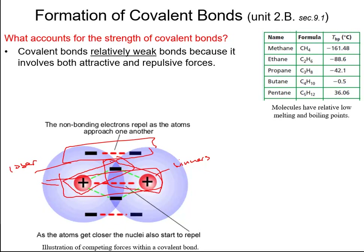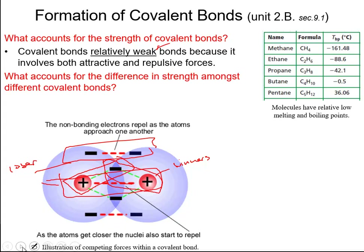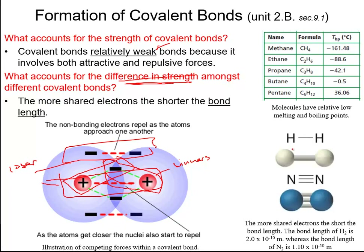These repulsion forces don't completely lose, which is why covalent bonds are relatively weak. But are all covalent bonds weak? The strength really depends on the amount of bonds present. For nitrogen, six valence electrons are shared between the two atoms — making it a triple bond. A triple bond makes the bond length relatively shorter than single bonds. The single bond length is almost twice as long, so the triple bond is a stronger connection. The more electrons being shared, the more bonds between the two atoms, the stronger the connection.